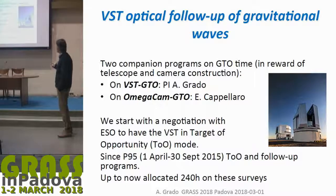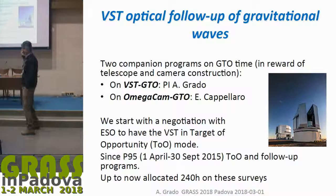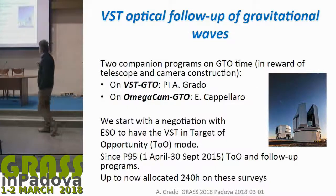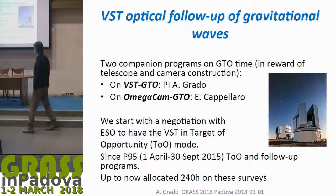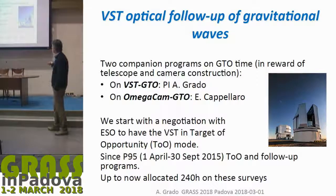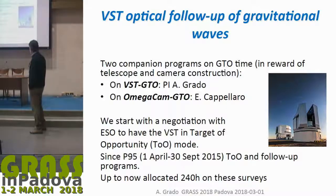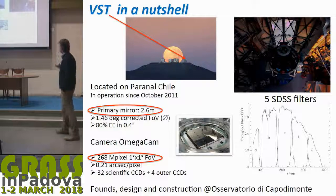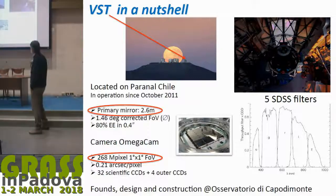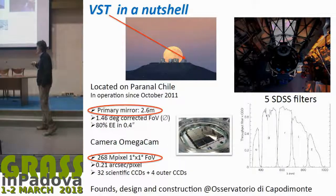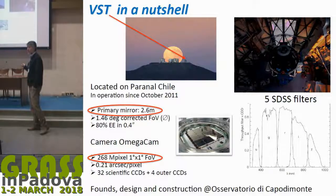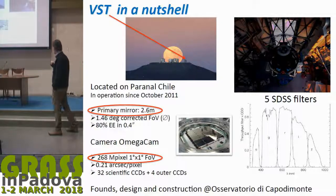We have the VST with two companion programs on guaranteed time. This is a large facility at ESO, and we started observing and searching for counterparts of gravitational waves since 2015. The VST is located on Paranal, it is a 2.6 meter telescope with very high image quality, equipped with a camera of a quarter billion pixels — a very high resolution instrument.